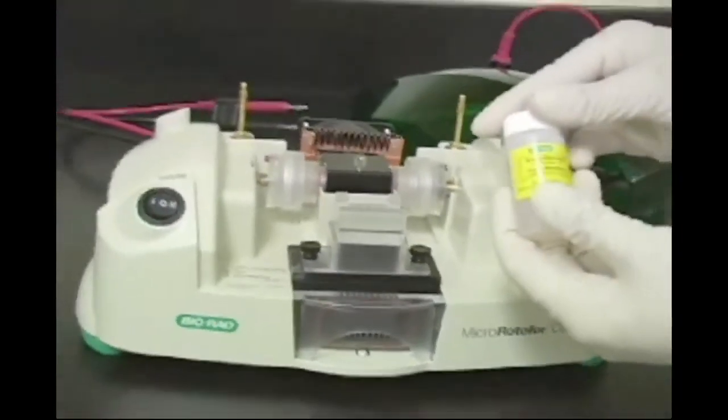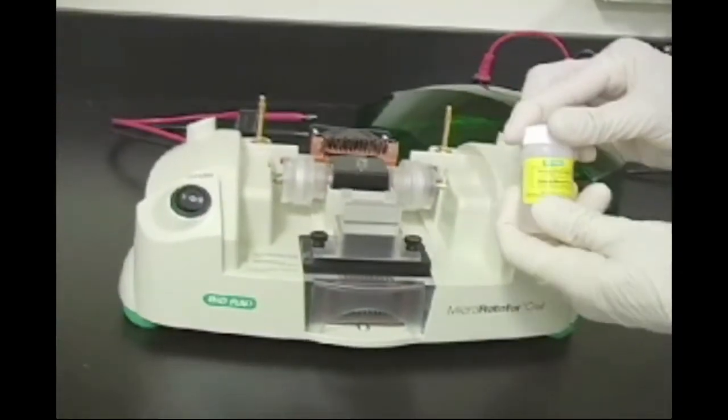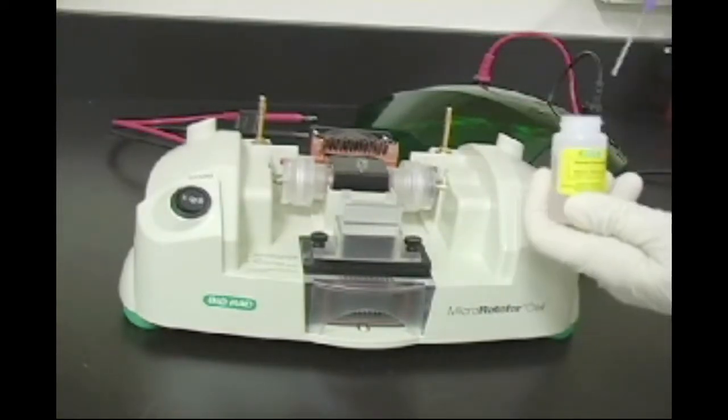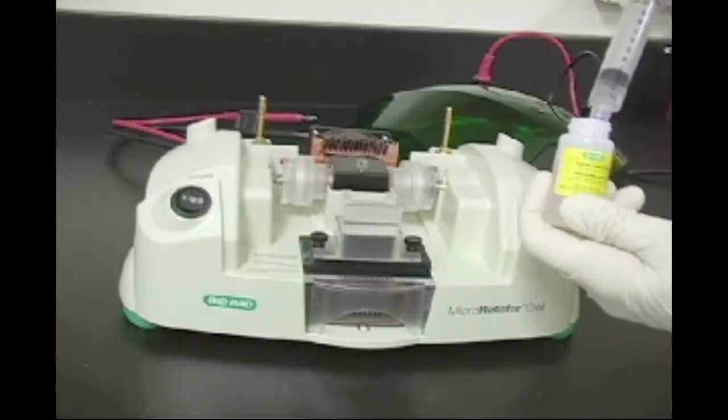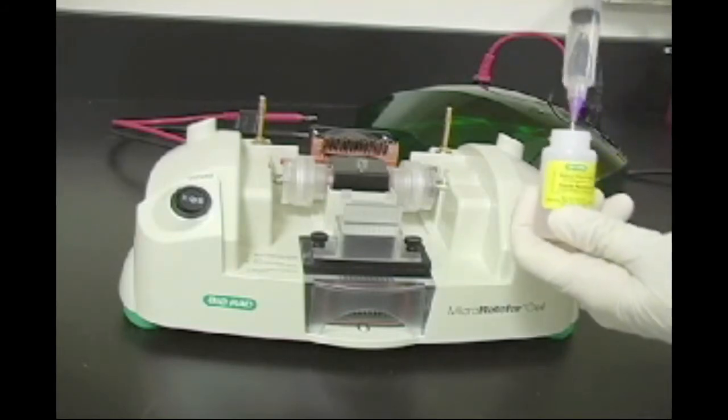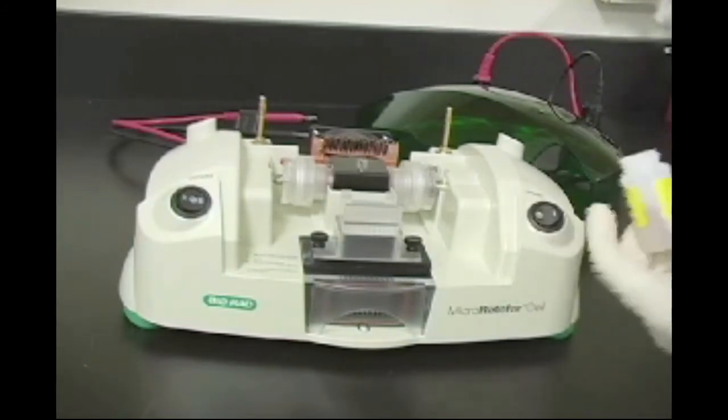Turn the power switch off. Using a 10 milliliter syringe, add 6 milliliters of 0.1 molar phosphoric acid through the vent hole of the anode or red assembly.